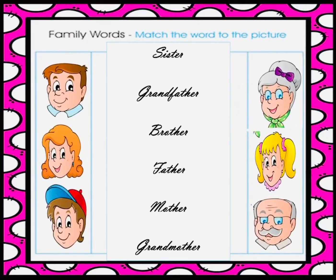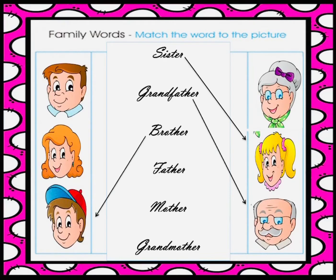So now this is the worksheet. Here you have to match the words to the picture. Our first word is sister, next grandfather, brother, father, mother, and last grandmother. So here we have to match the words with the correct picture.